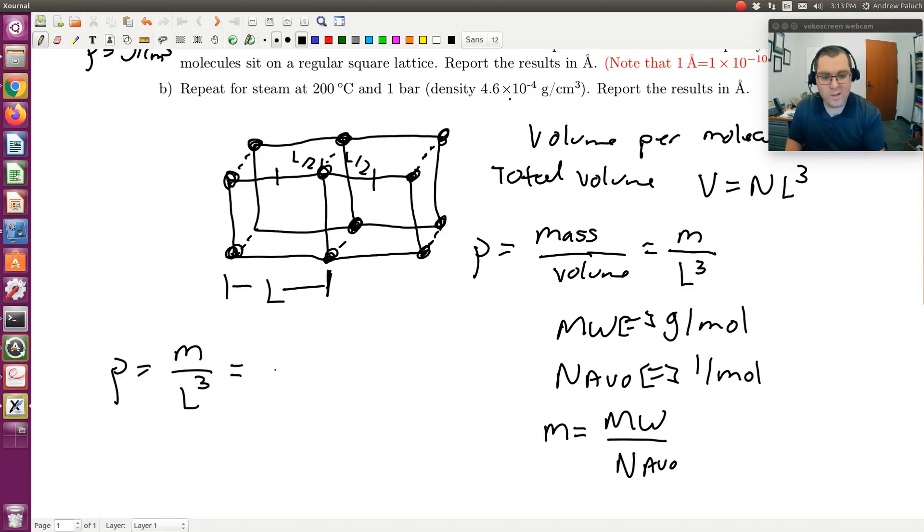So rho, then, is the mass of a molecule over a length cubed. And then in terms of quantities that I know, that'll be the molecular weight divided by N Avogadro, divided by L cubed.